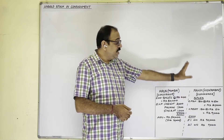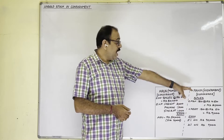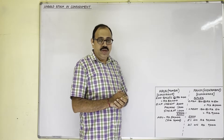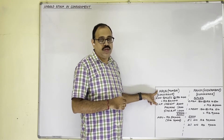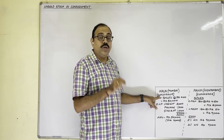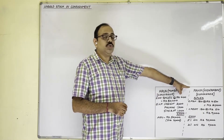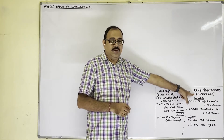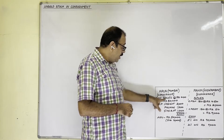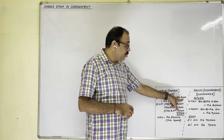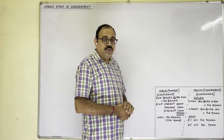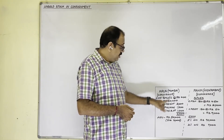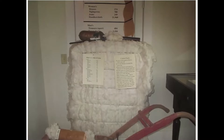From sale proceeds, Rahim can deduct his commission; the remaining amount he has to pay to Arun. This agreement is known as consignment. The person sending the goods is the consignor — Arun is the consignor. The person to whom goods are sent is the consignee — Rahim is the consignee. Arun sent 200 cotton bales at 400 rupees each to Rahim, so 80,000 rupees worth of goods are sent by consignor to consignee on consignment basis.